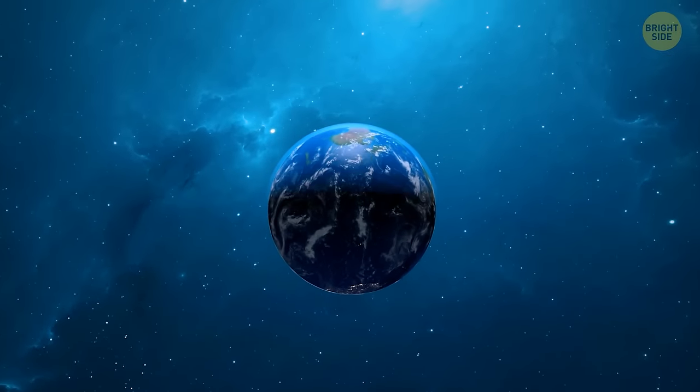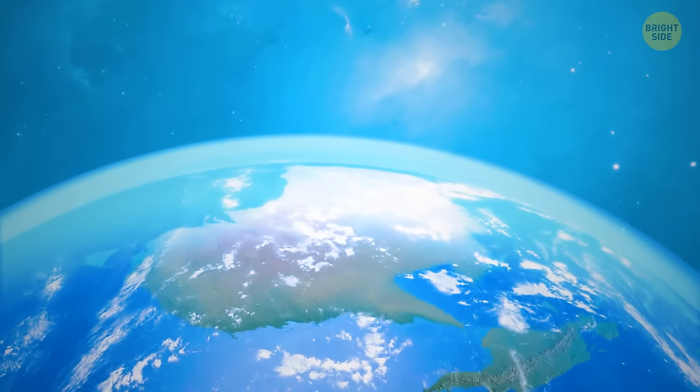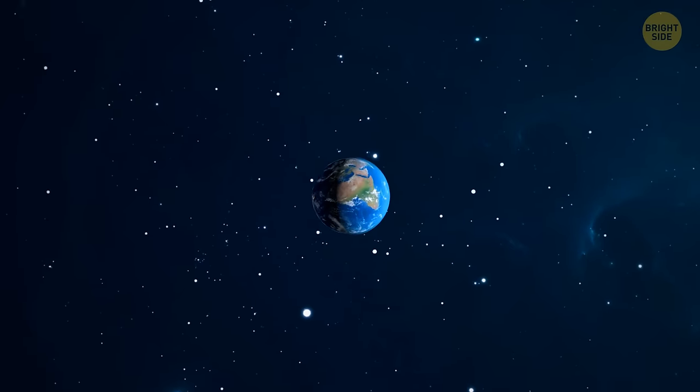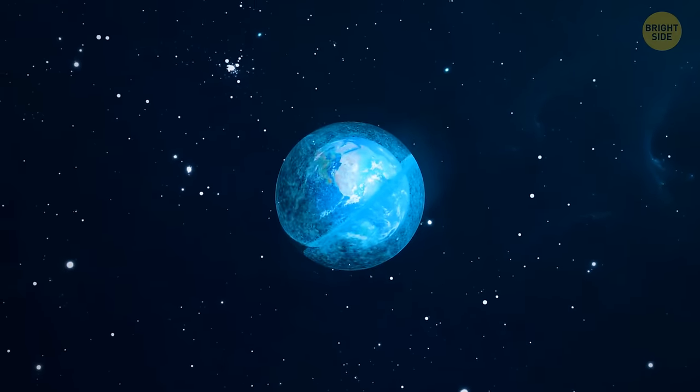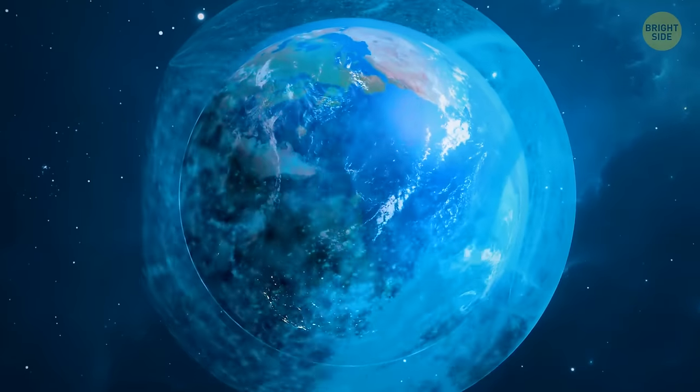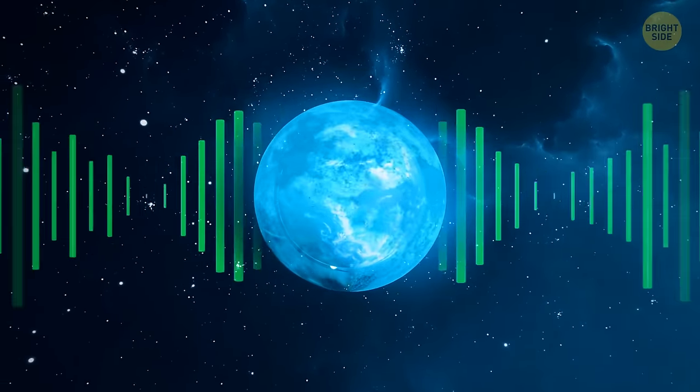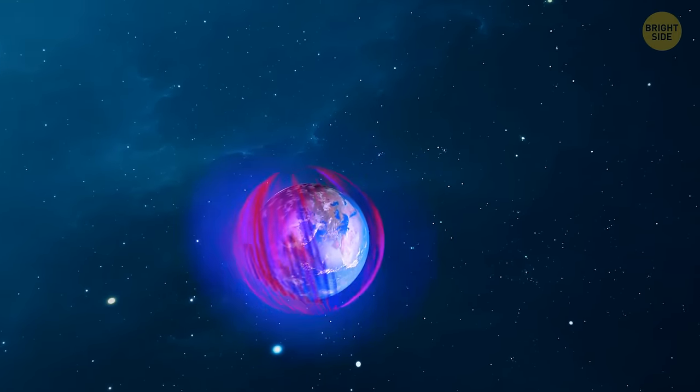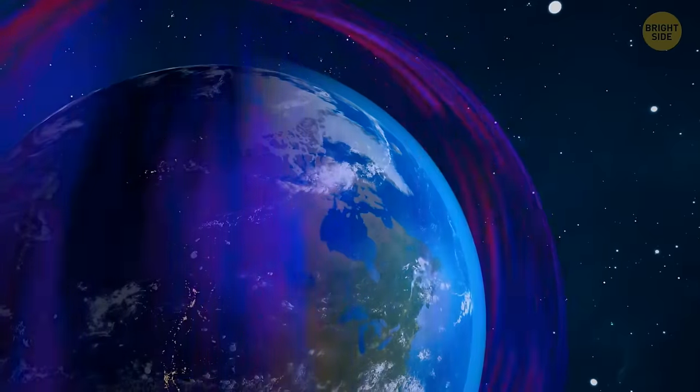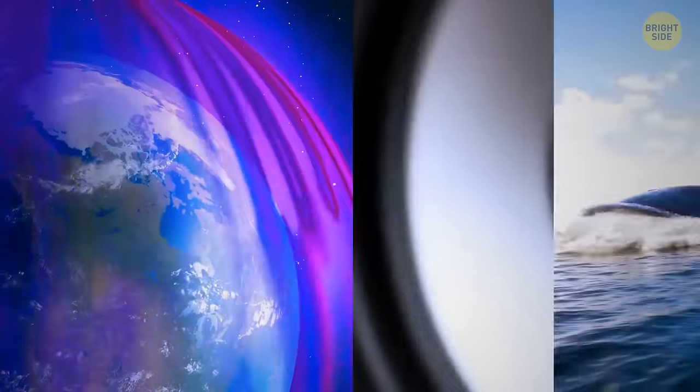But if you look up, there are many layers besides the atmosphere and the ozone layer. Scientists recently discovered a strange bubble here, which protects our planet from radiation. And nope, it's not the Earth's magnetic field. This bubble is made of radio waves.